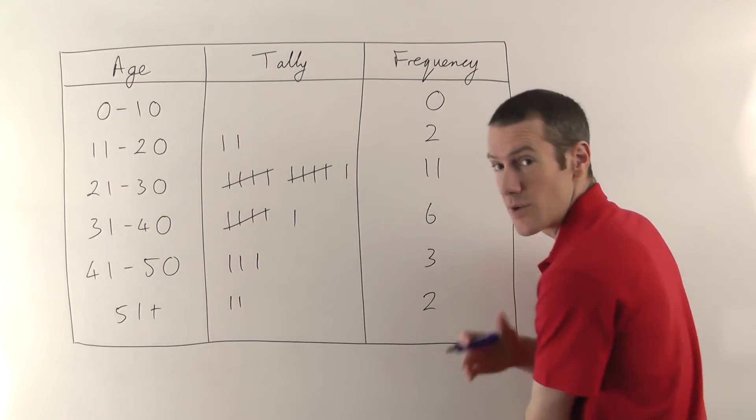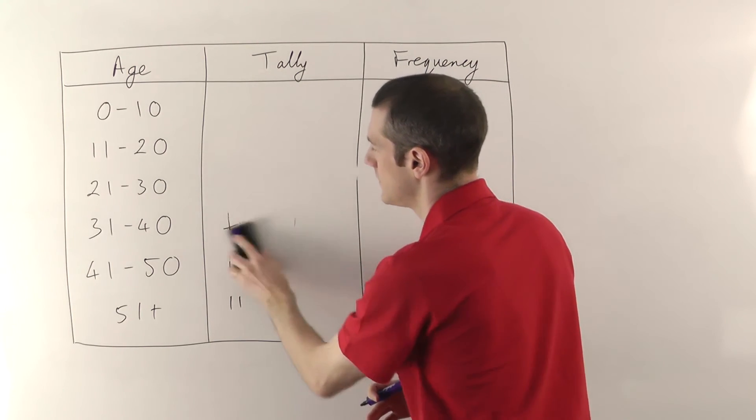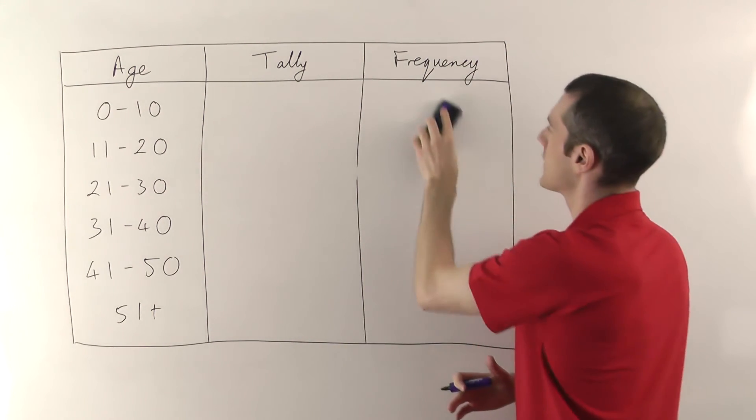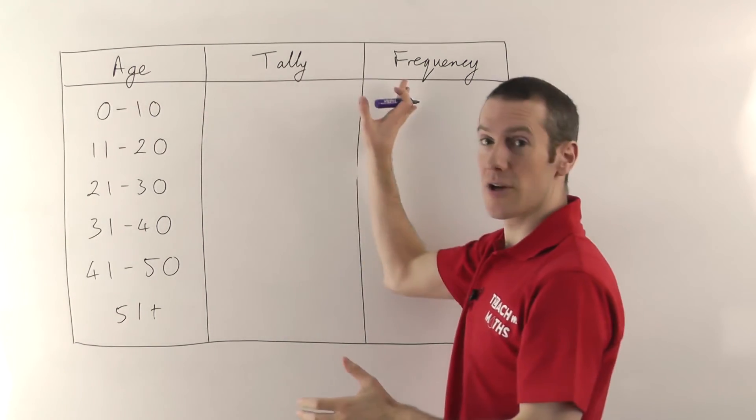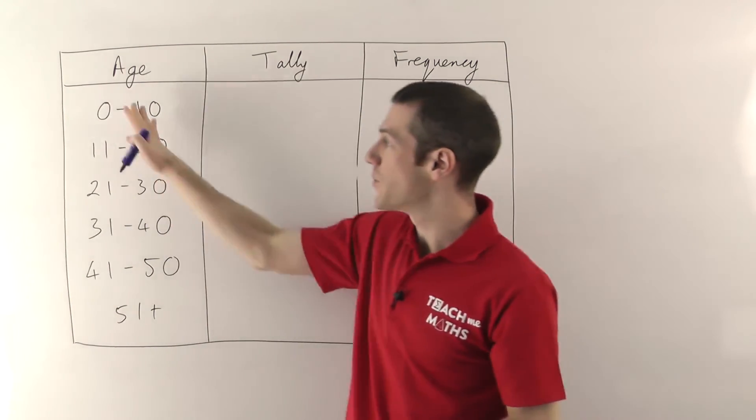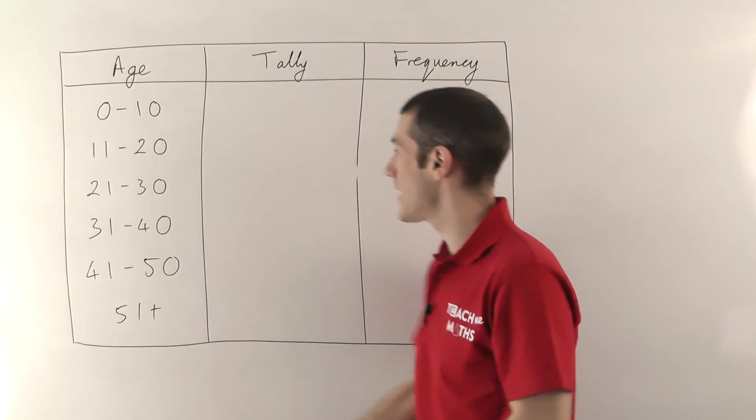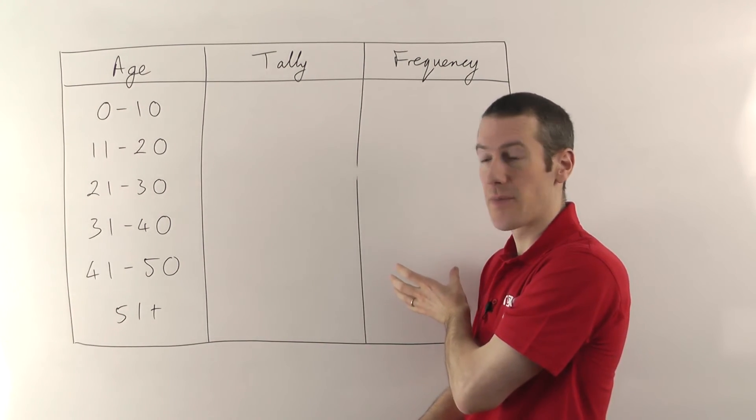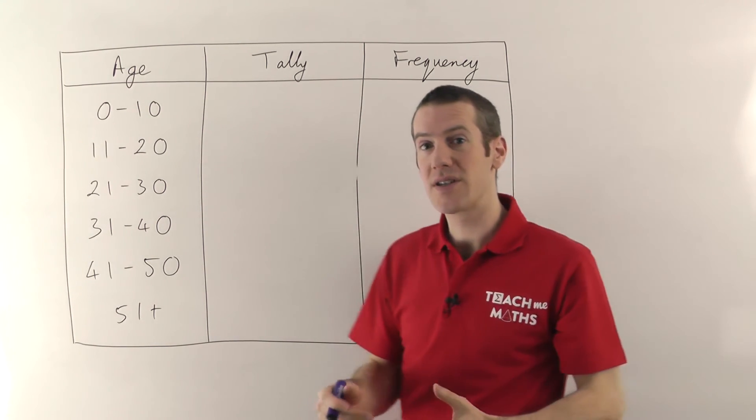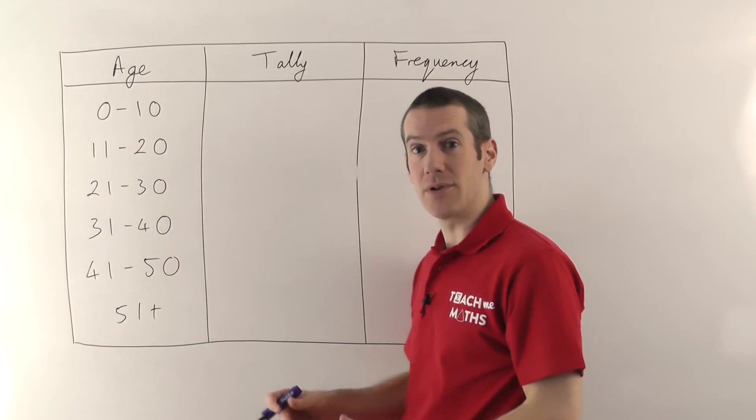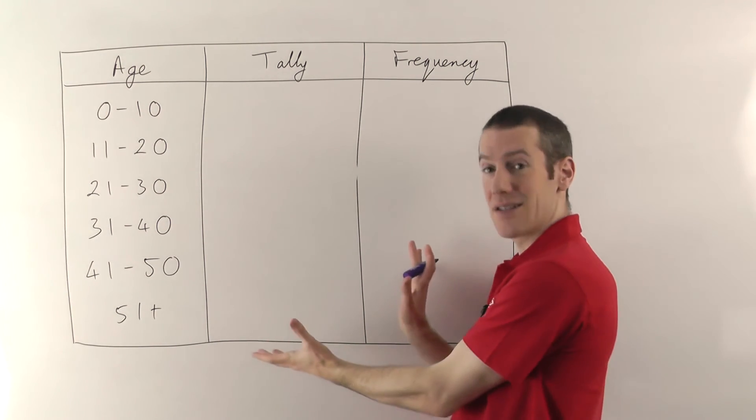Now what you would do in practice is you just draw out the table like that. So you put the three columns: age, tally, frequency. You put all the different options that they could have ticked down the left-hand side, and you just need to leave these ones blank. Obviously you don't have the questionnaire results so you can't fill it out, but if the question says give a suitable table to collect the data, that's the table that you would use.